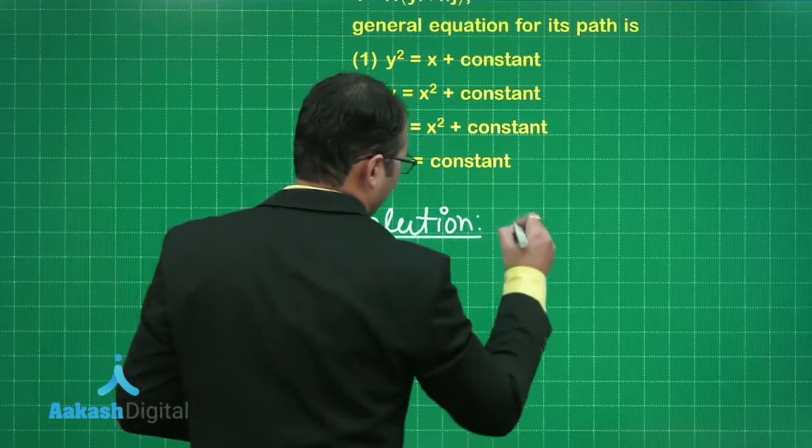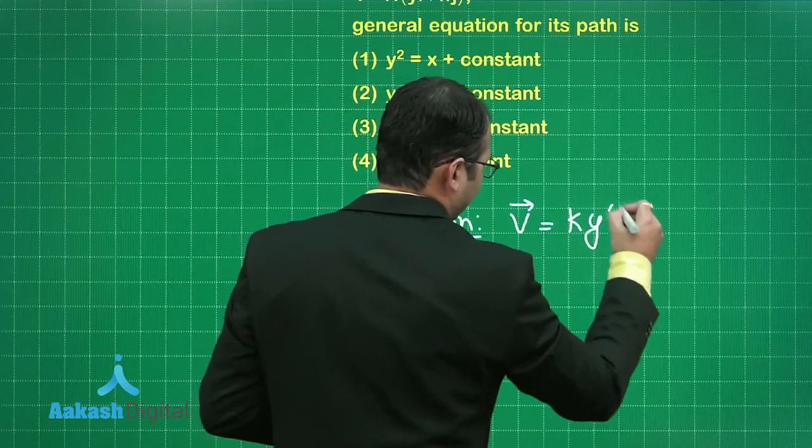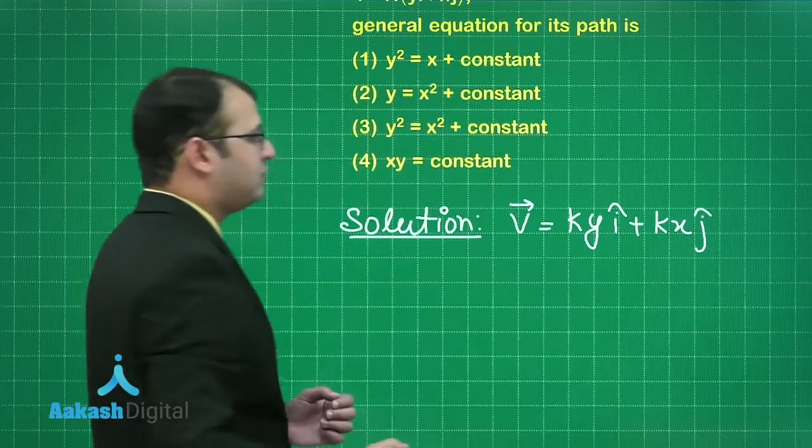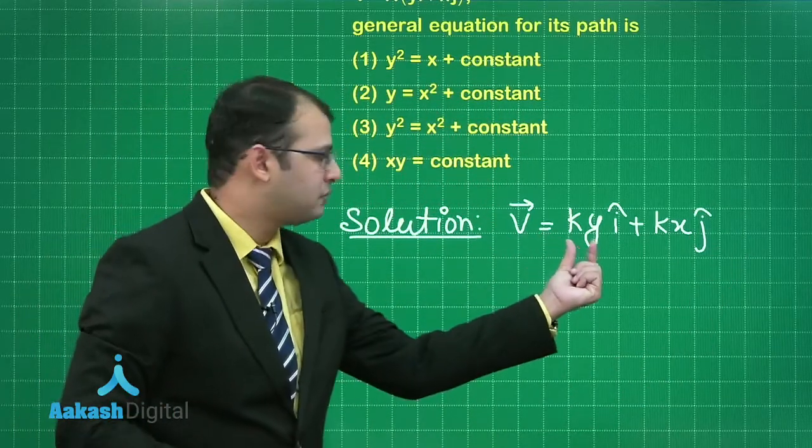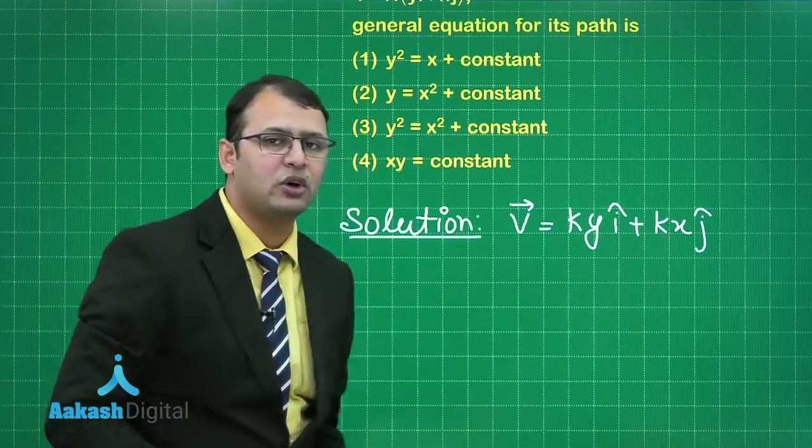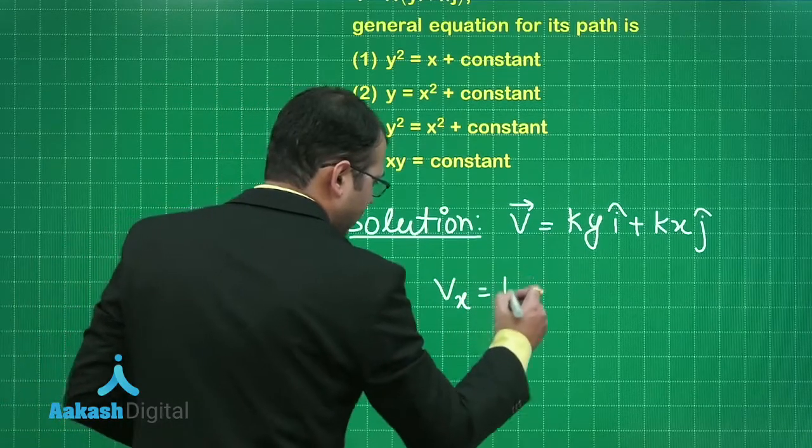First of all concentrating on the equation of velocity it can be written as K y i cap plus K x j cap. That means velocity along x axis is dependent on y and velocity on y axis is dependent on x coordinate. Shall I write it like this, Vx would be equal to K y.